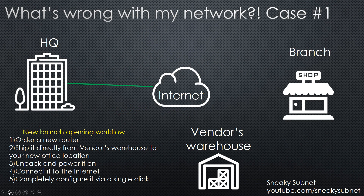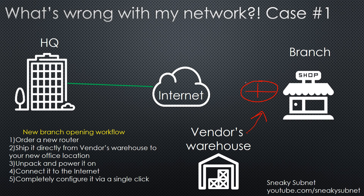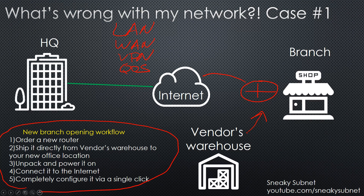Let's imagine that you need to open a new branch office. Can you order a new router, ship it directly from your vendor's warehouse to your new branch's location, unpack it, power it on, connect it to the internet and via a single click configure it completely with LAN, WAN, VPN, security policies, quality of service and policy-based routing? With SDN, you can do exactly that. So that's your new branch opening workflow.